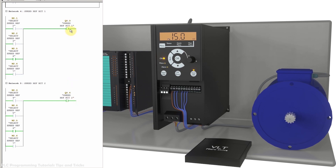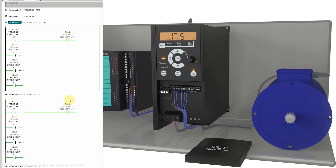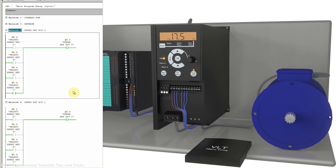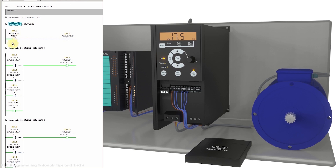Turning on M2.5 loads the sixth preset frequency reference and the motor starts running at 15 Hz. Turning on M2.6 turns on all three bits — their sum is 7 — loading preset reference 7, and the motor runs at 17.5 Hz. To run the motor in reverse, we turn on PLC output Q0.1, which sends a digital signal to the VFD to run in reverse, and the motor starts running anti-clockwise at 17.5 Hz.